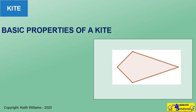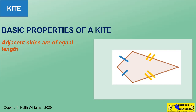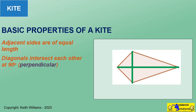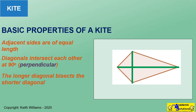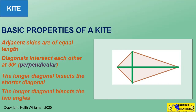Adjacent sides of a kite are equal to each other. The diagonals of a kite are perpendicular to one another — or they cut each other at an angle of 90 degrees. The longer diagonal of a kite bisects the shorter diagonal. The longer diagonal of a kite also bisects the angles at the apex of the kite.